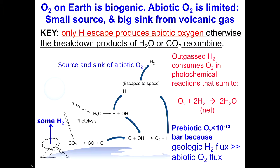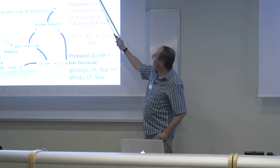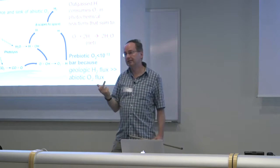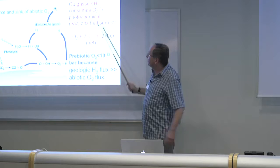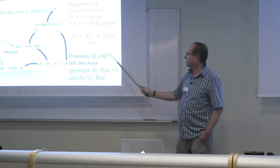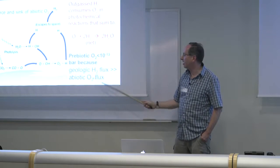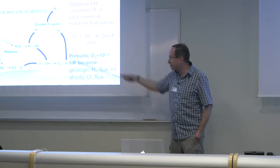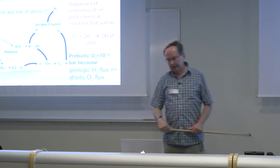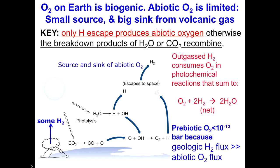This escape rate is limited — oxygen has to be mixed up, diffuse through the upper atmosphere, and be lost. But volcanic gas, although mainly water vapor, contains a little hydrogen and carbon monoxide — enough that it basically overwhelms this abiotic oxygen. Prebiotic levels of oxygen are calculated to be extremely small — about 10⁻¹³ bar — because the volcanic flux is still much larger than the even smaller flux of abiotic oxygen. For any gas, we have a balance between sources and sinks. It's like running water into a bath: if you have a big plughole the level won't rise very high, but a small plughole means it rises higher. That's basically how all these gas levels are set.